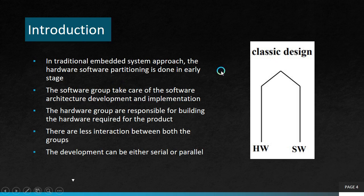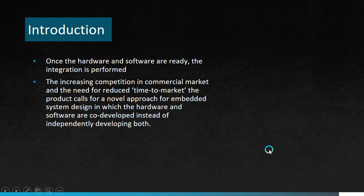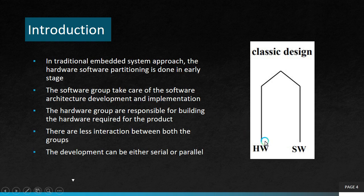In the traditional embedded system approach, the hardware-software partitioning is done in the early stage. The software group takes care of the software architecture development and implementation, and the hardware group is responsible for building the hardware required for the product. As shown in this figure, the initial project design is split into hardware and software at the early stage, with hardware and software people working separately. There is not much interaction between both groups, and the development can be either serial or parallel.